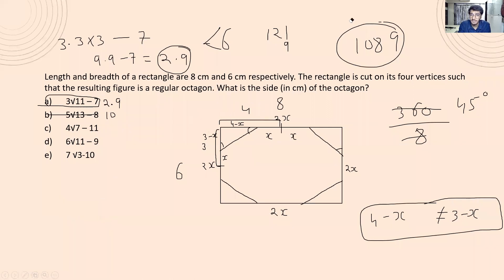4 root 7 minus 11: 2.6 into 4 is about 10.4, and 10.4 minus 11 will give negative value, which cannot be possible. 6 root 11 minus 9: 3.3 into 6 is 18, 18 minus 9 gives 9, which is not less than 6, so answer is wrong. 7 root 3 minus 11: root 3 is 1.7, so 7 into 1.7 gives about 11.9, and 11.9 minus 11 gives about 1, which is too less. The answer has to be 2.9, and that is option A.